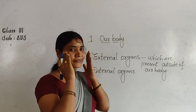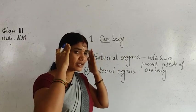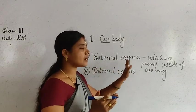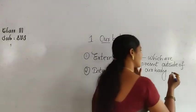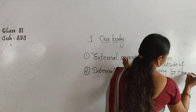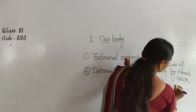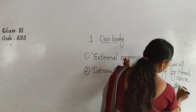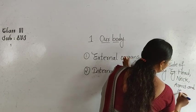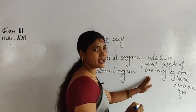For example, you take ears, hands, neck, head — we are touching them right now. So that is the nature of external organs. Examples are: head, neck, arms, and legs. So these are the examples of external organs.